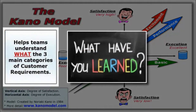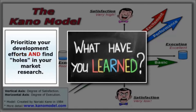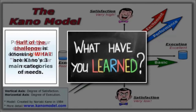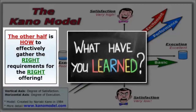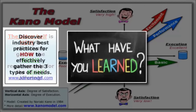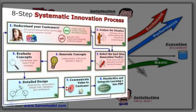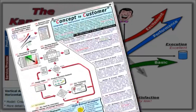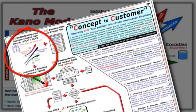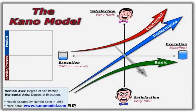To summarize, the Kano model helps teams better understand what the three main categories of customer requirements are and how they influence satisfaction, so you can prioritize your development efforts and find holes in your market research. Half of the challenge is knowing Kano's three main categories of needs. The other half — which Kano never taught — is how to effectively gather these three categories of requirements for your specific project. In the second part of this video on KanoModel.com, you will discover industry best practices for gathering these three categories of requirements, with an emphasis on Kano's excitement quality, through an eight-step process called systematic innovation. You can also find information on how and where the Kano model fits into a product development process. Thanks for watching, and please contact us with any questions at info@KanoModel.com.